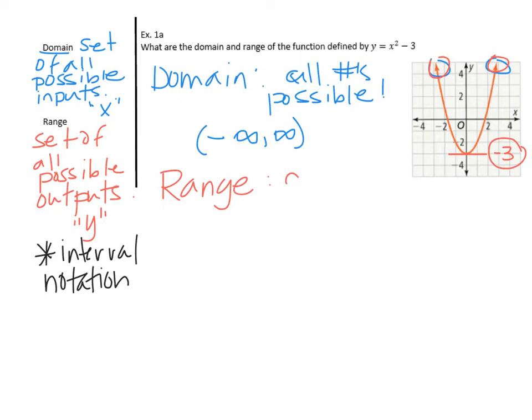So negative 3 is the smallest value, and then everything goes up from there. Greater than or equal to negative 3 is how we would define our range value. Whenever we write interval notation, it's always smallest to biggest, which means negative 3 goes first. And then because the arrows point up, that's going to go to positive infinity.